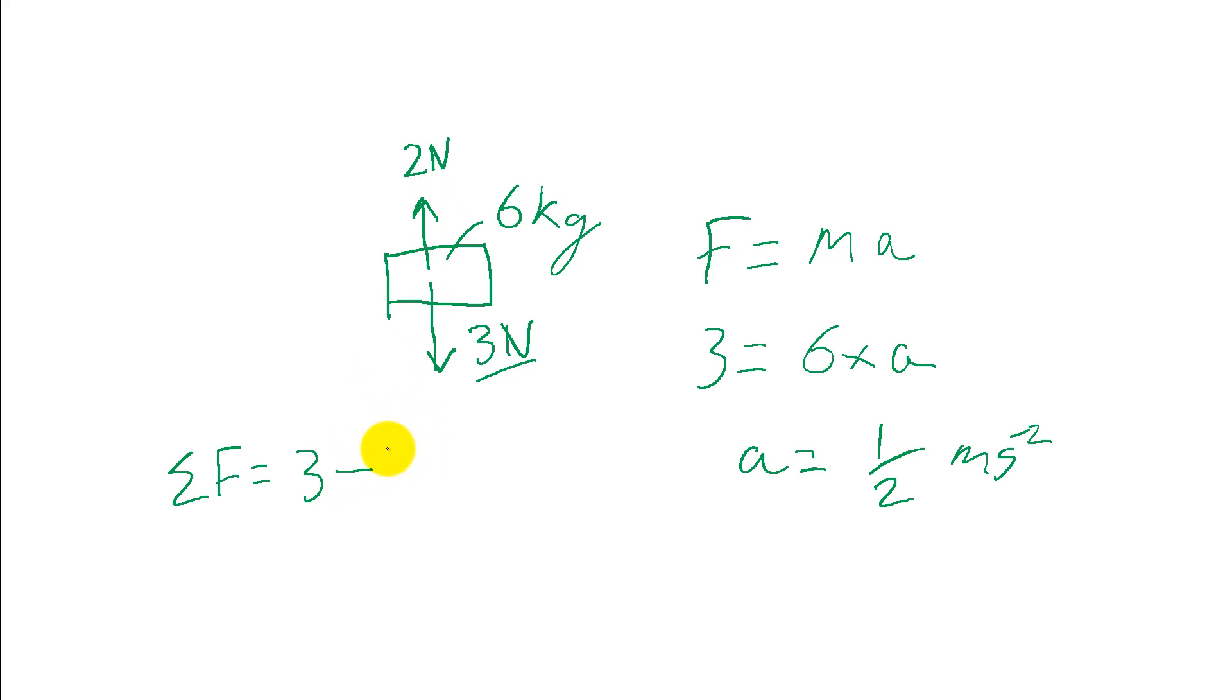We're going to take that away, three minus two to give us one newton. When we take this and put it over here, we're this time going to have an acceleration equal to one sixth of a meter per second squared. That's this one newton divided by the six kilos to give us our acceleration, which is just this rearranged with our one newton substituted in instead.